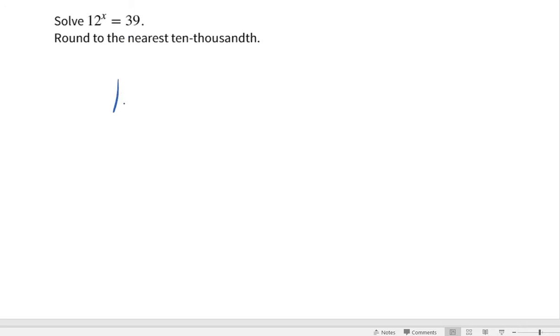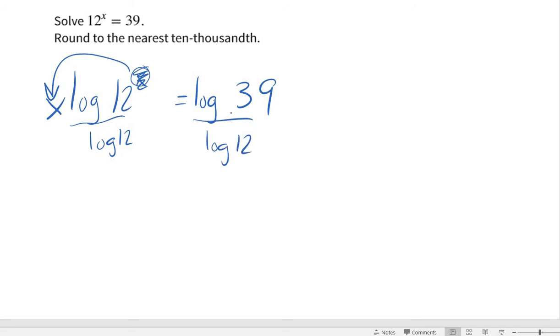Solve 12 to the x equals 39. Okay, well, our variable's up here, so we're going to do the log of both sides. And normally we'll do log. You could do natural log because we have those two buttons on our calculator. Really, you could do any log. And then that allows us, using that power property, we bring the x out front. And now we've got x times log 12 equals log 39. Well, log 12 is just a number. Let's divide it by both sides. So x equals log 39 divided by log 12.